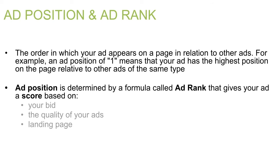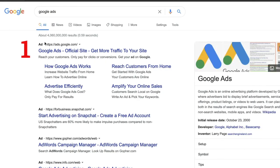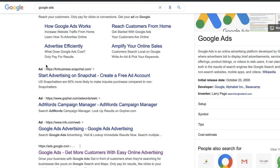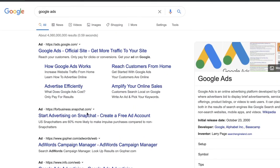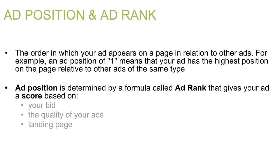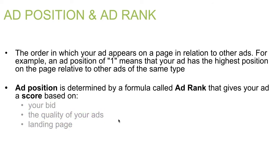Next, let's talk about ad position and ad rank. Ad position is the order in which your ad appears on a page relative to other ads. An ad position of one means your ad has the highest position on the page. Ad position is determined by a formula called ad rank, which gives your ad a score based on your bid, the quality of your ad, and your landing page.